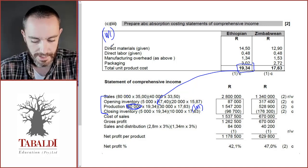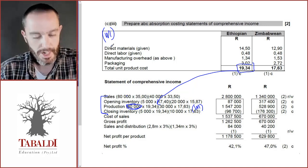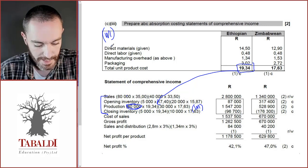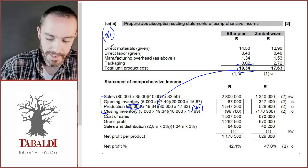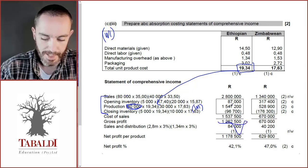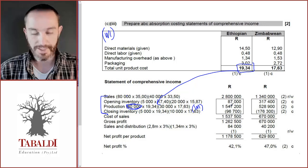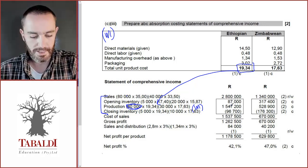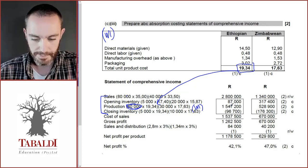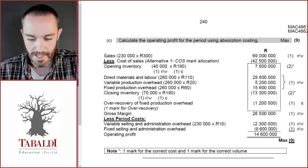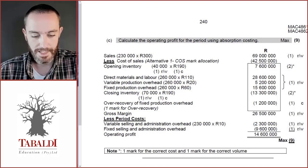In that question there was no opening inventory and no over or under allocation. You can see we get our gross profit and then deduct sales and distribution costs — all our non-manufacturing costs — to get to profit.